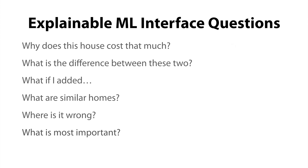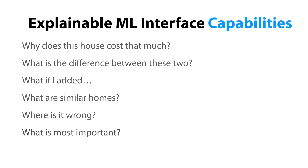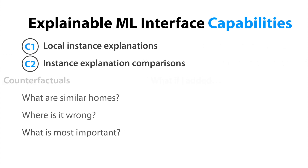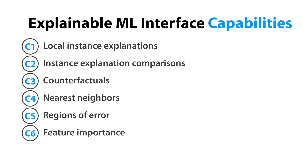Through an iterative design process working with expert machine learning practitioners and researchers, we gathered and grouped questions like these and distilled them into explainable machine learning interface capabilities. These include local instance explanations, explanation comparisons, asking counterfactuals, finding nearest neighbors, identifying regions of error, and computing feature importance.